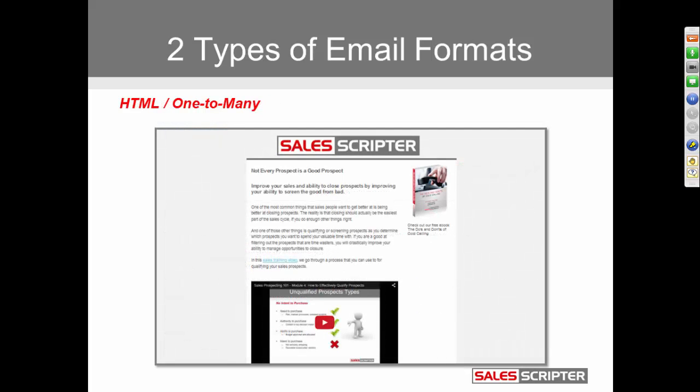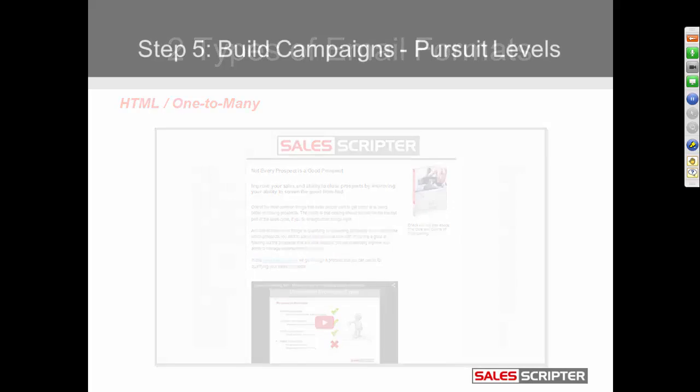The other type of email format I want to show you is an HTML format — this is a one-to-many. This is actually one of our email templates, similar to one you may have received to sign up for this webinar. With this format, you're not hiding the fact that this email is going out to a lot of people — we're not trying to make the handwritten envelope here. It's obvious it's a mass email, and we're not ashamed of that. There are certain times when you want to send this format. It typically has images, looks more professional, and has more of a corporate, coming-from-a-company feel. I'll show you when you might want to send either of these formats.